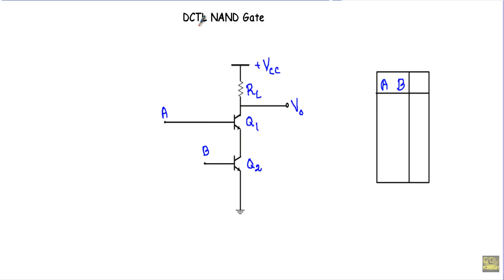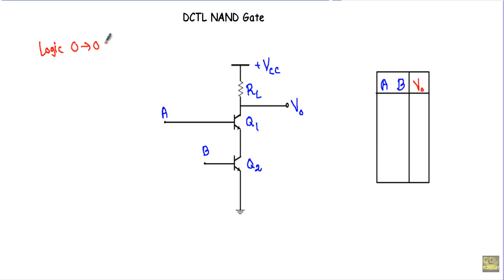In this video I will show you the operation of a DCTL NAND gate and a DCTL NOR gate. This is the circuit structure of our DCTL NAND gate. We will use two transistors Q1 and Q2 and connect the input terminals to the base of transistors Q1 and Q2. This circuit is known as a direct coupled transistor logic circuit. For logic 0 we apply a DC voltage of 0.2 volt, and for logic 1 we apply a voltage of 0.8 volt.